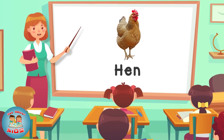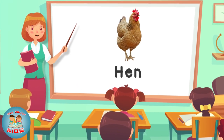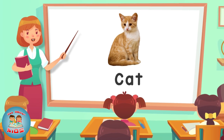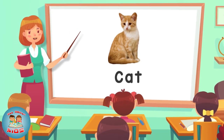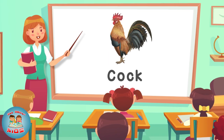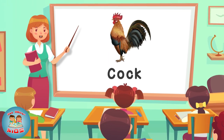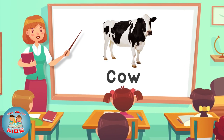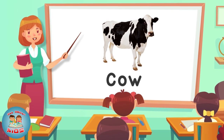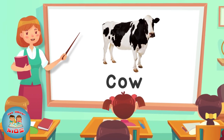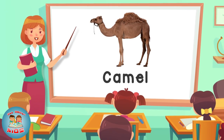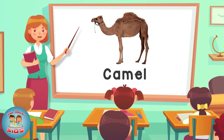Animal's name. Cat — this is a cat. Cook — this is a cook. Cow — this is a cow. Camel — this is a camel.